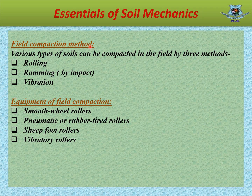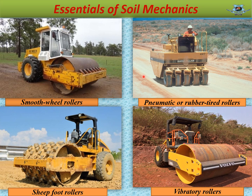Field compaction method: Various types of soils can be compacted in the field by three methods — rolling, ramming, and vibration. The following equipment is used in the field to achieve compaction: smooth wheel rollers, pneumatic or rubber-tired rollers, sheepsfoot rollers, and vibratory rollers. These are the equipment of field compaction.